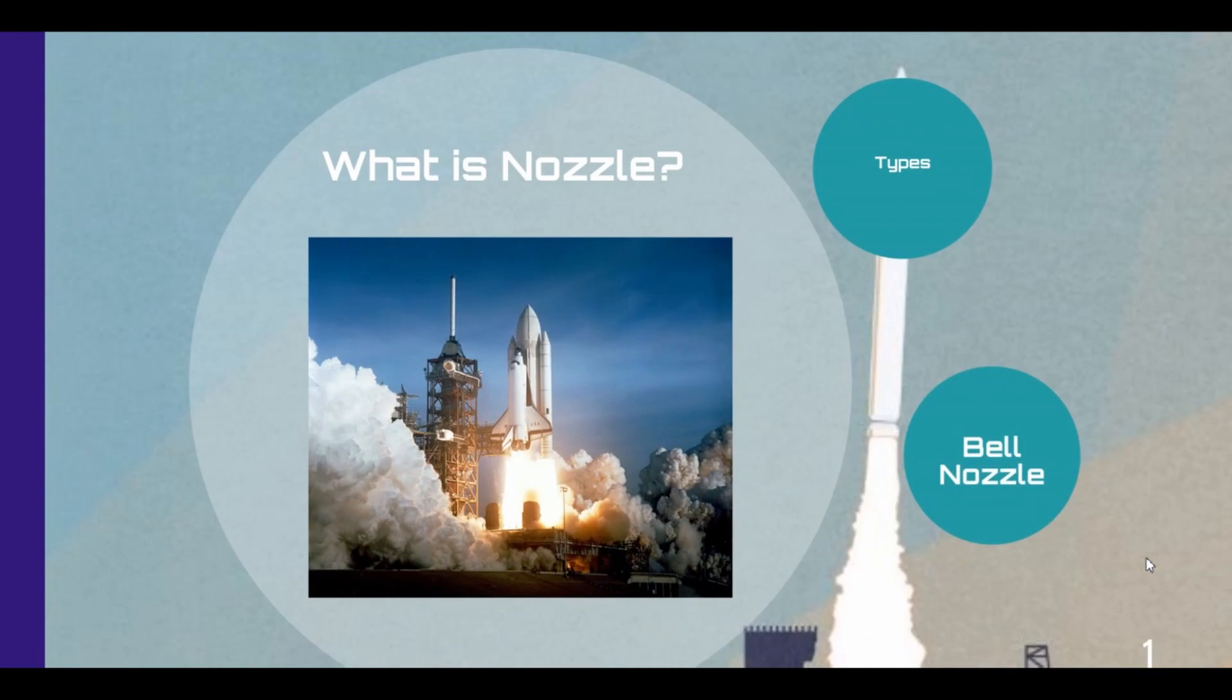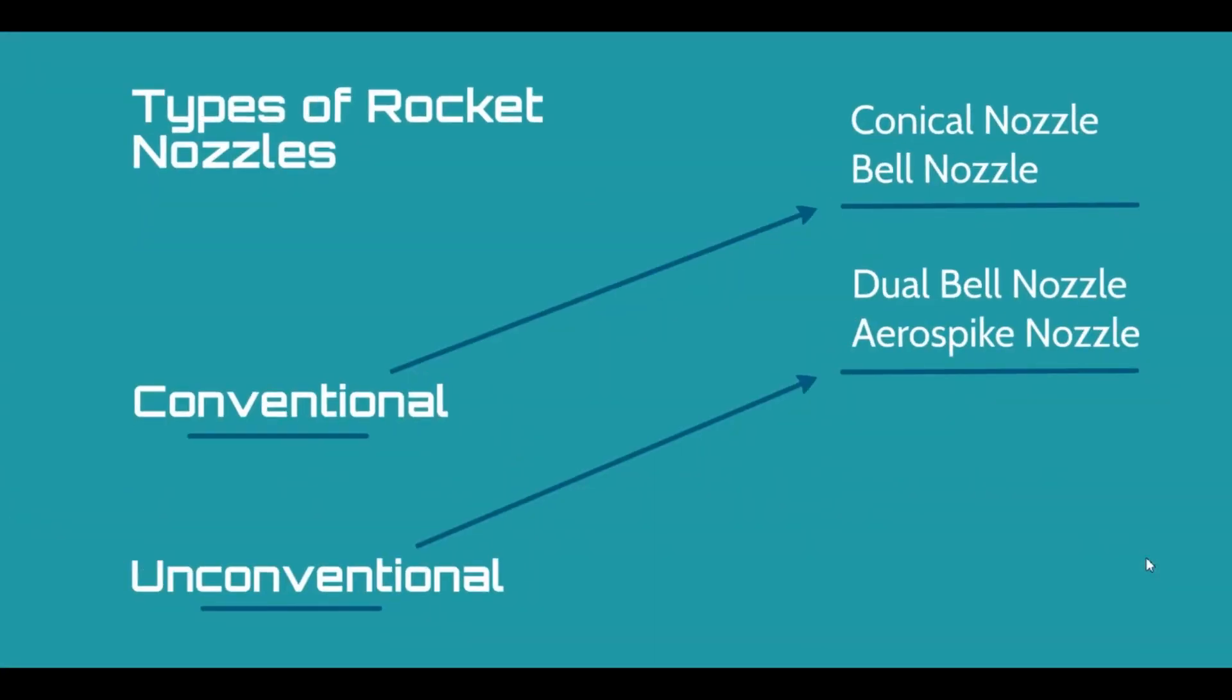What is a nozzle? A nozzle is basically a device which increases the velocity of the flow. There are different types of nozzles available. We have conical nozzle, bell nozzle - they are conventional types. And we have unconventional nozzles also, such as dual bell nozzle.